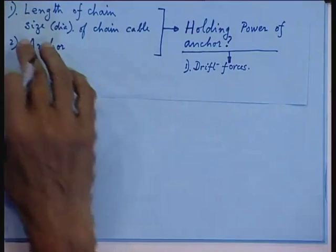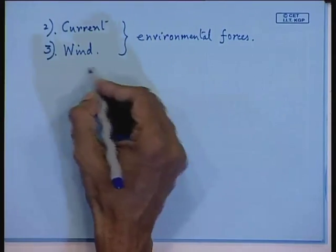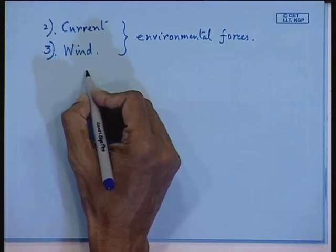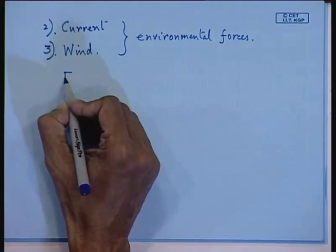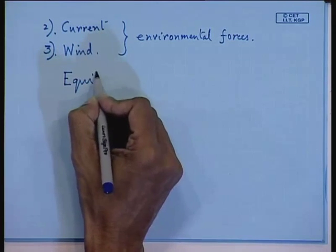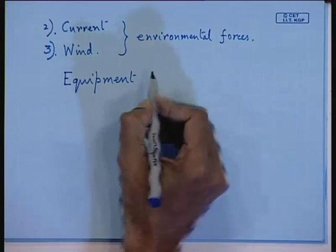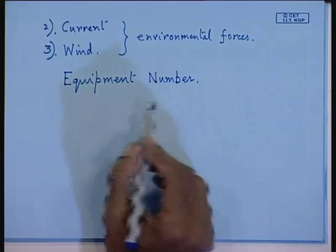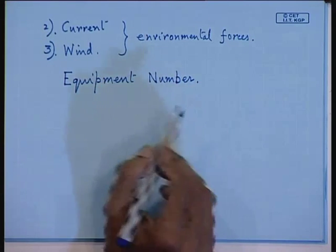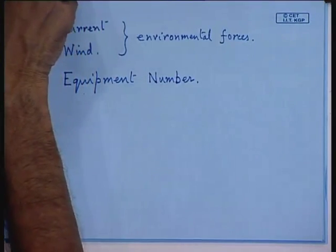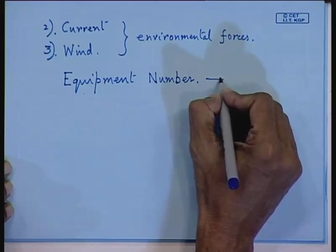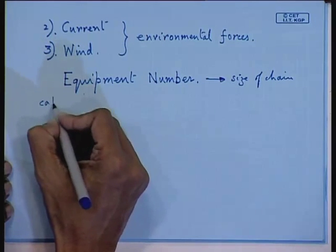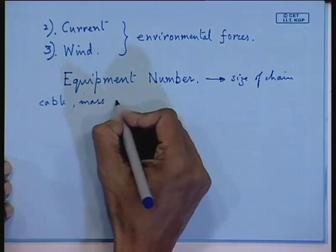If you turn the pages of Lloyd's or ABS, they give you a formula for calculating the holding power of the anchor, and from that you end up with a number called an equipment number. After calculating the equipment number, you automatically get the chain cable size, and from that you can calculate the mass of the anchor.